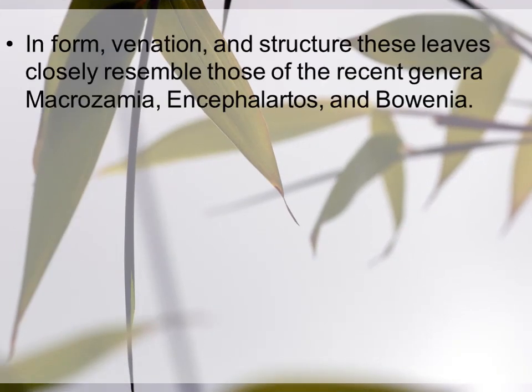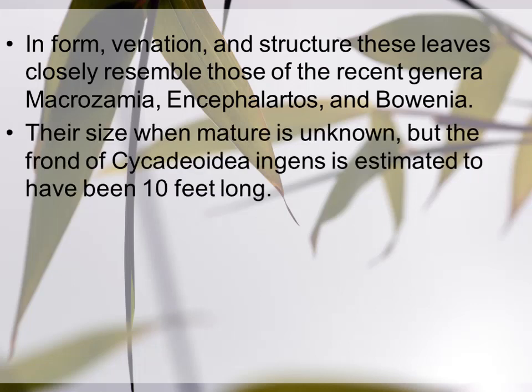In frond venation and structure, these leaves closely resemble those of the recent genera Microzamia, Encephalartos, and Bowenia. Morphologically، ان کا venation اور leaf structure ان recent genera کے ساتھ similarities show کرتا ہے۔ Their size when mature is unknown, but the frond of Cycadeoidea ingens is estimated to have been 10 feet long.